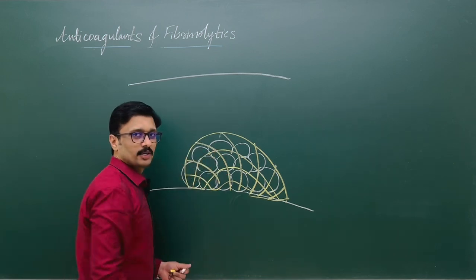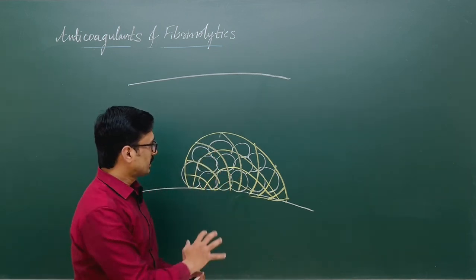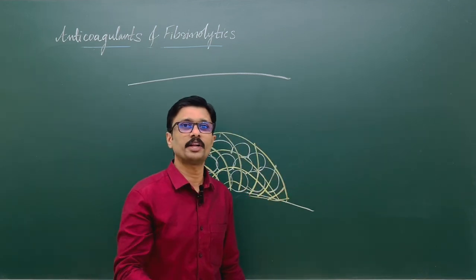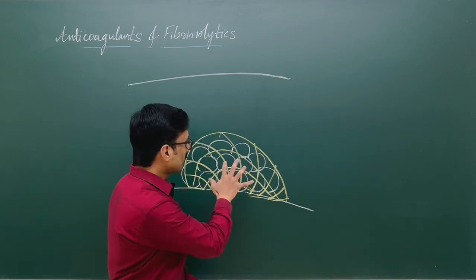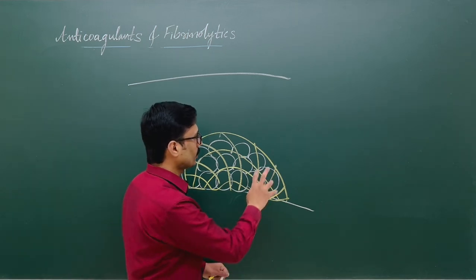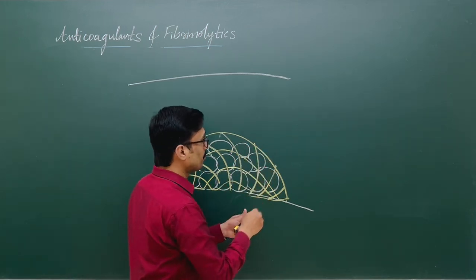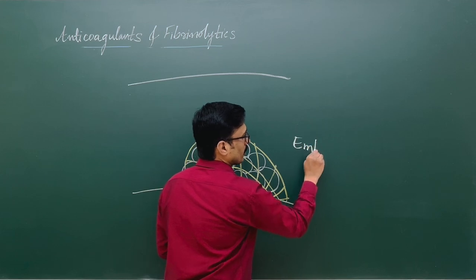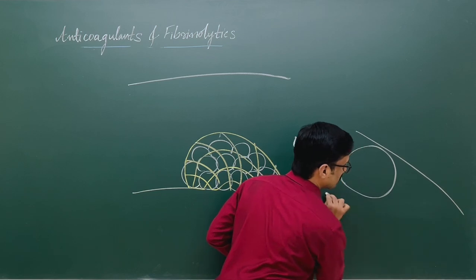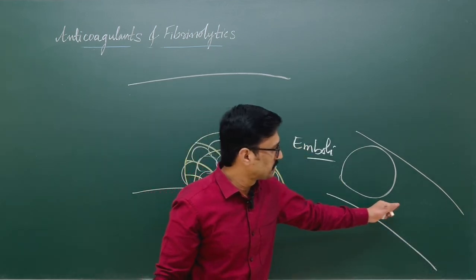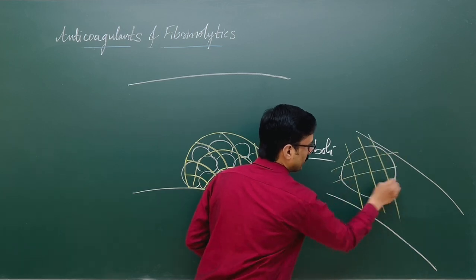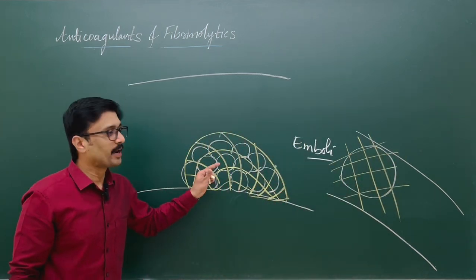Now this clot, if unchecked, can grow in size. Sometimes clot formation happens in circulation, so these clots have to be degraded. If it continues to grow, or if it is released from this portion, it acts as an embolus, and this embolus can block blood vessels so that blood supply to tissue will be affected. So this clot has to be broken down.